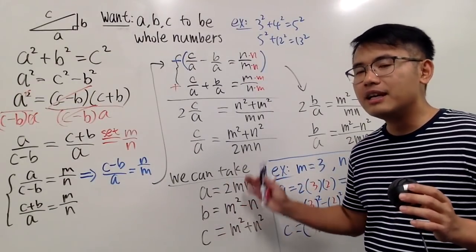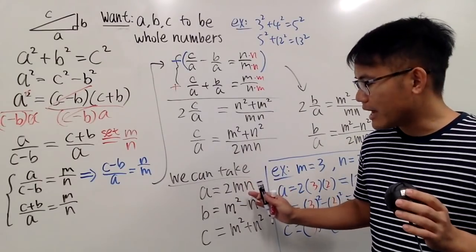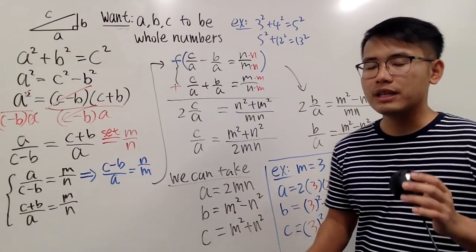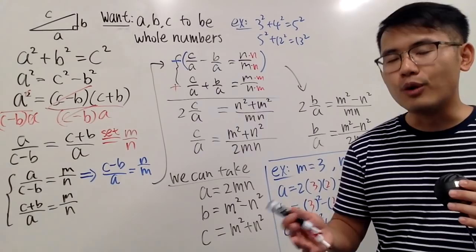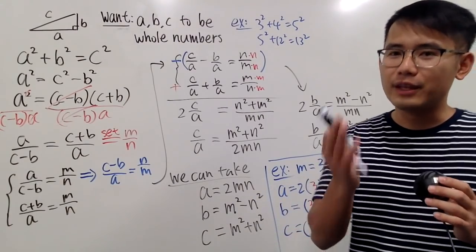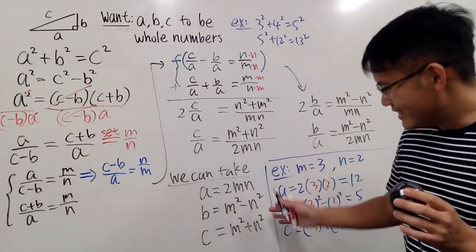And you guys can have fun with this formula. Just pick some values for M and N that you like and work out the ABC values. And leave a comment down below and let us know which Pythagorean triple you produce. Anyway, this is it.